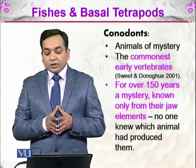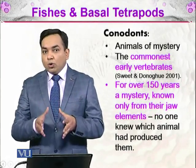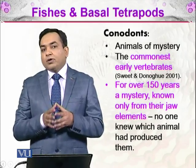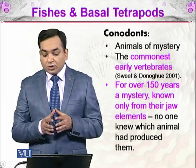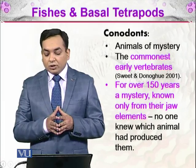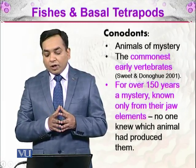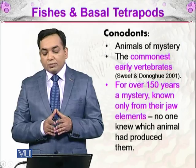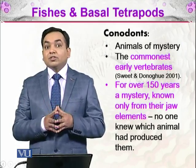Then come the conodonts — the animals of mystery. We had the fossils and they had weird structures but we couldn't define what these animals indeed were. These were the most common early vertebrates, as established by Sweet and Donog in 2001. For over 150 years, they were a mystery known only from their jaw elements, and no one knew which animal had produced them. We will be discussing conodonts in detail.